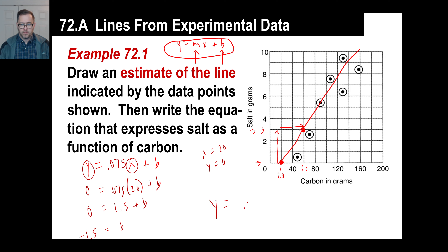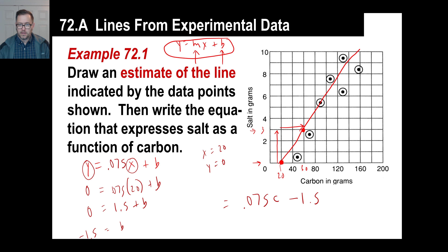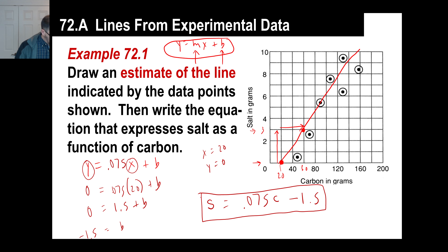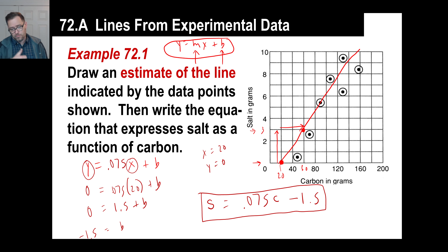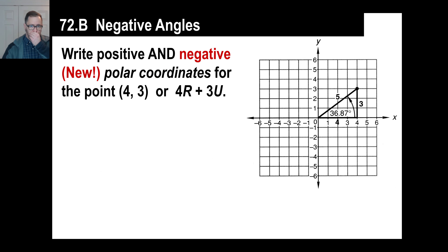We have our equation: y equals 0.075x minus 1.5. You can substitute the variable names - x is carbon and y (or S) is salt. Just to show you: the book got two possible answers - 0.075C minus 3, and 0.11C minus 5.75. My answer of negative 1.5 is close. When you get something close to that, check it, and if it's reasonably close, go to the next problem.